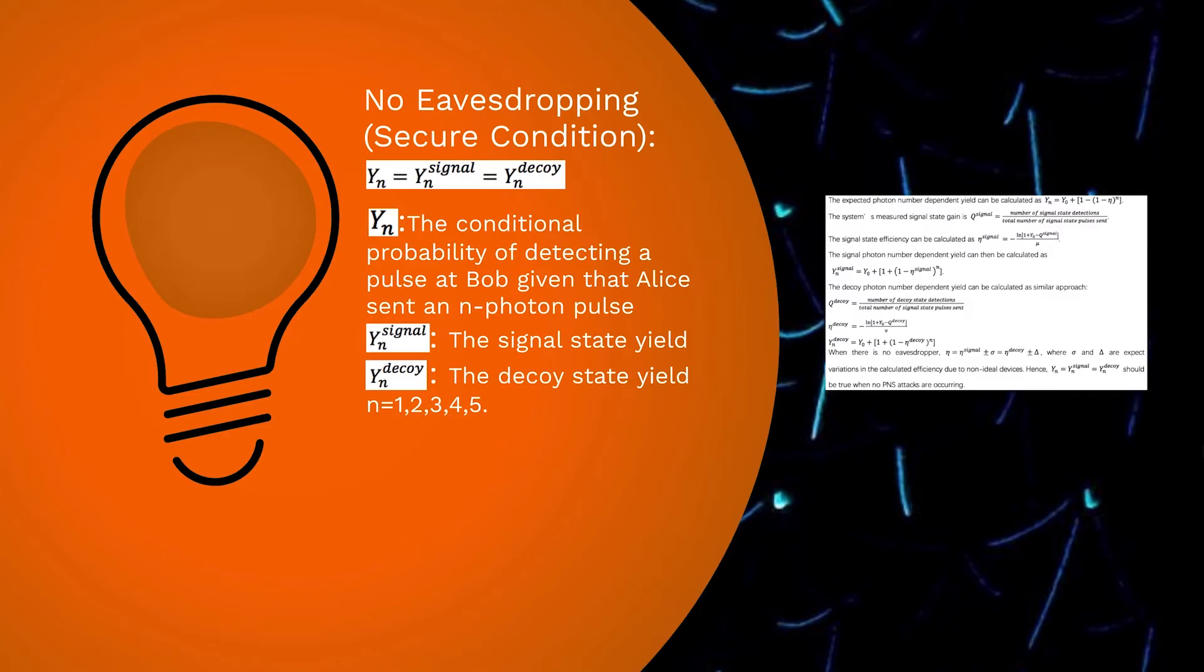Y_N^signal represents the signal state yield, Y_N^decoy represents the decoy state yield, and N equals 1, 2, 3, 4, or 5.